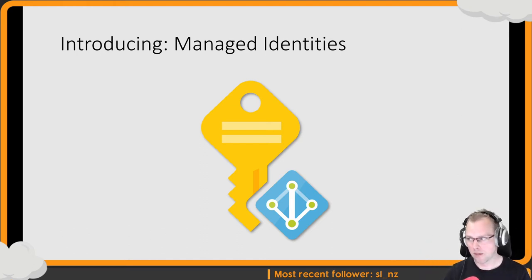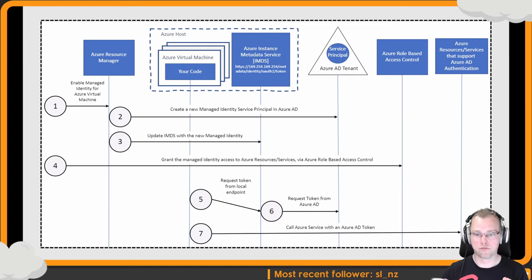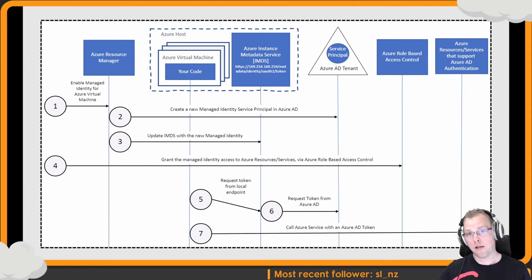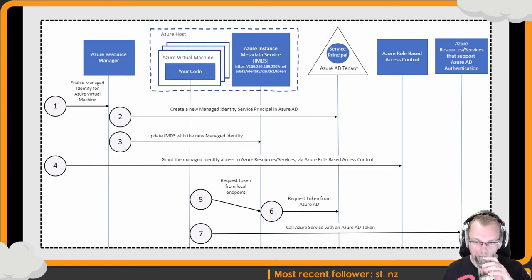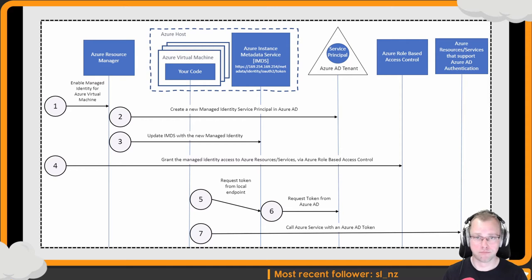Previously you had to work with connection strings, SAS tokens, and lots of secrets to maintain in your configuration. With managed identities you don't have to — your app just has an identity, and this identity either has or doesn't have access to other services. There's a nice diagram in the documentation on managed identities. It shows how an identity requests a token from Active Directory for a specific service, then sends the token to a service which can authorize it. It's pretty much the same as a regular OAuth flow.